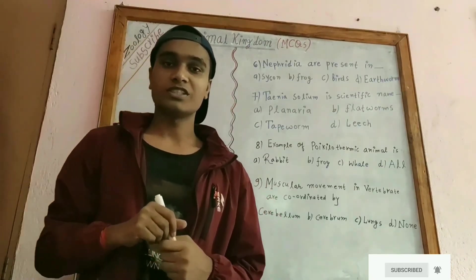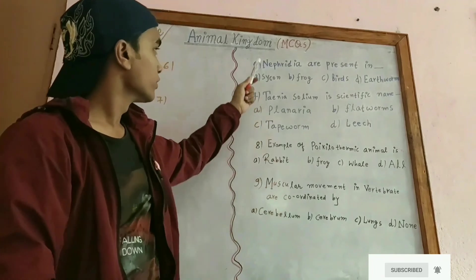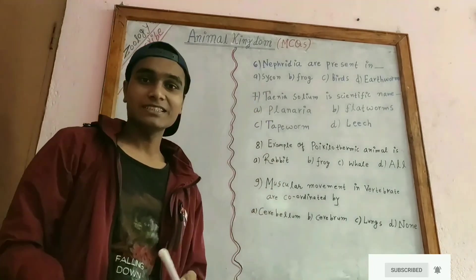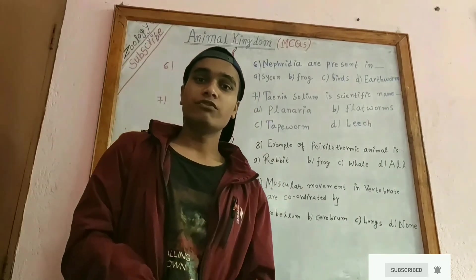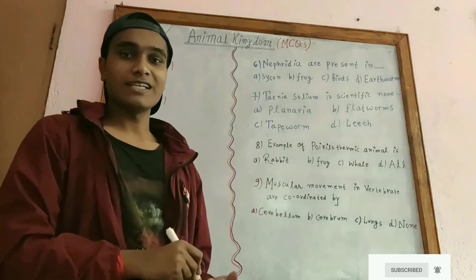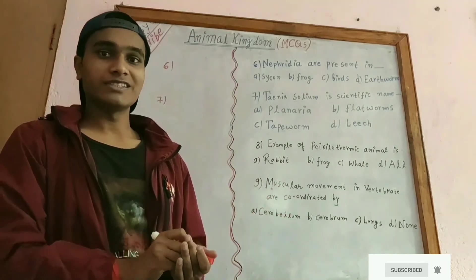In question number 6, nephridia are present in which organism? Nephridia are excretory organs seen in earthworms, which belong to Annelida.